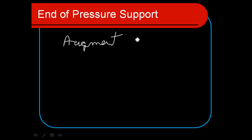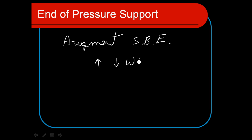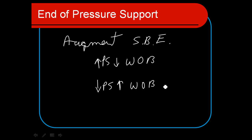Pressure support is a fantastic mode to augment a patient's spontaneous breathing efforts. If you use a high level of pressure support, we're going to augment these a lot to decrease the work of breathing. If we use a low level, the patient will still be doing a fair amount of work of breathing, or it can actually be a normal amount of work of breathing. The ventilator only cycles on as the patient's breathing in. Thank you very much.